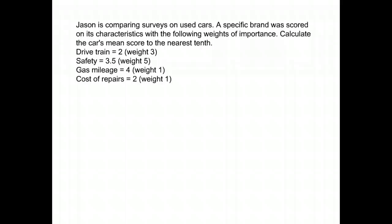And here's our last example. Jason is comparing surveys on cars. A specific brand has scored on its characteristics in the following weights of importance. So this is a weighted average. This wants to calculate the mean, which means the average score to the nearest tenth.